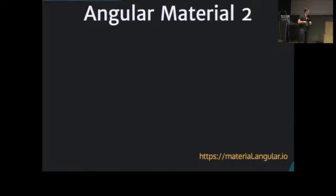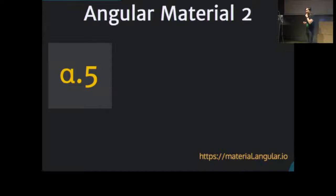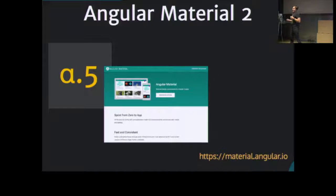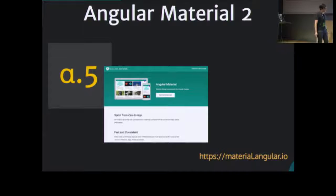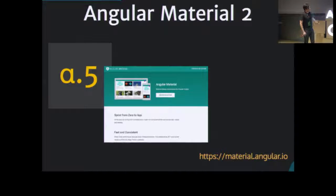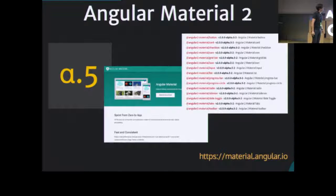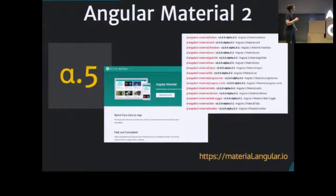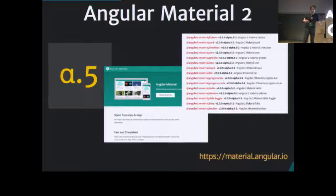Let's move to Angular Material 2, our main topic. It's still alpha. They have a pretty nice and pretty empty website, material.angular.io—they went the same way and created a separate website for version 2. Version 1 is at material.angularjs.org, so don't mix them up. Fortunately it's just one page there at the moment. And there are 14 components—you see 15 packages at NPM and one of them is core, so we have 14 components.